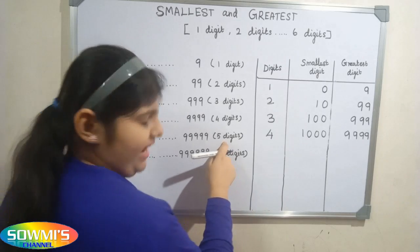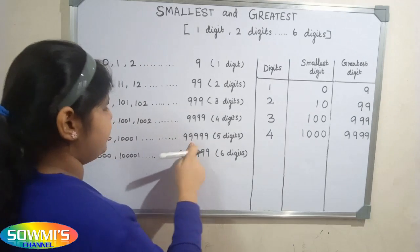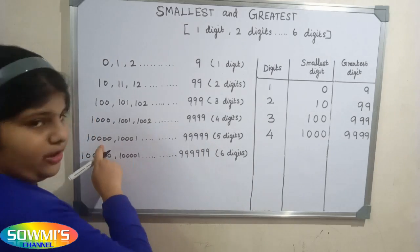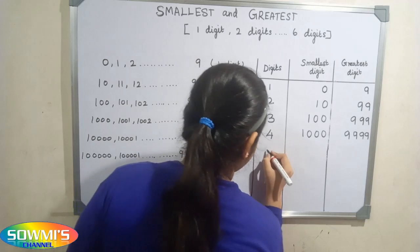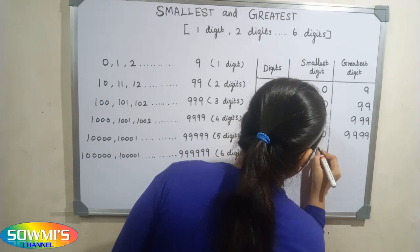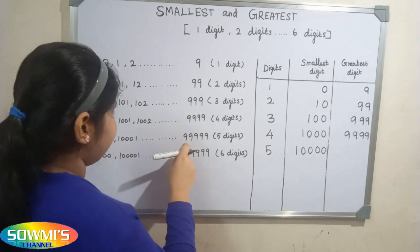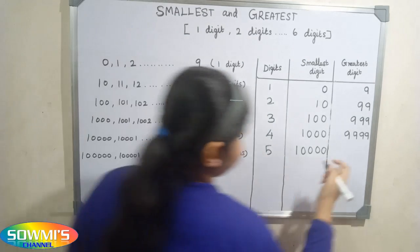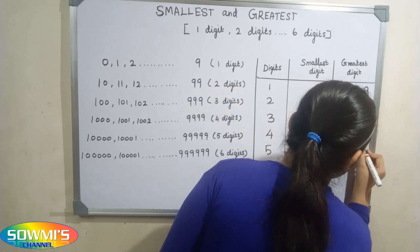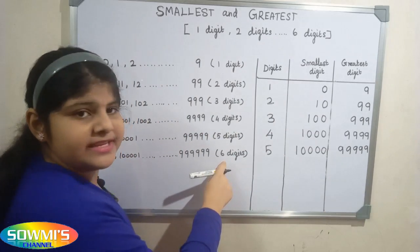Five digit number starts with ten thousand and ends in ninety-nine thousand nine hundred and ninety-nine. So the smallest five digit number is ten thousand.